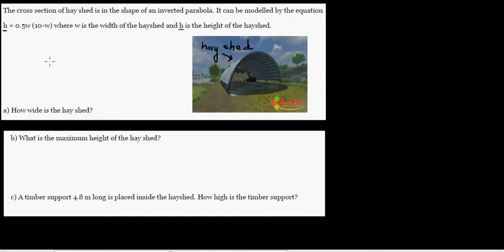Let's draw the graph of this equation. This is the H or Y axis, and on the X axis you've got W which is the width. By looking at this equation we can say the X intercepts are going to be 0 and 10. This is a parabola going up like this.